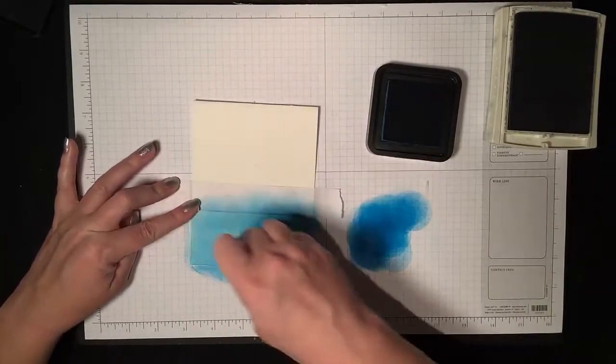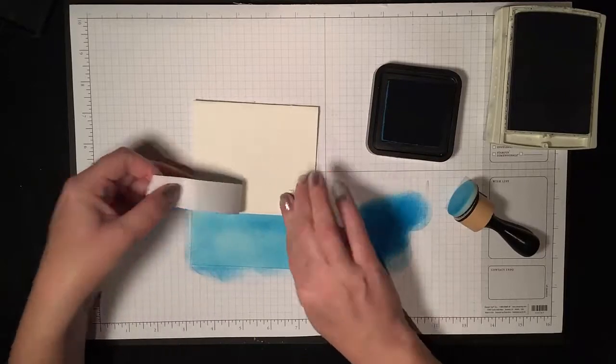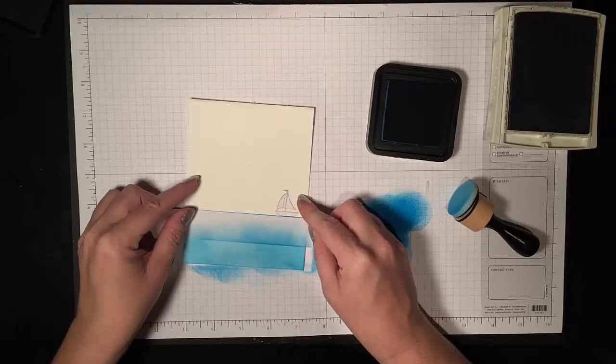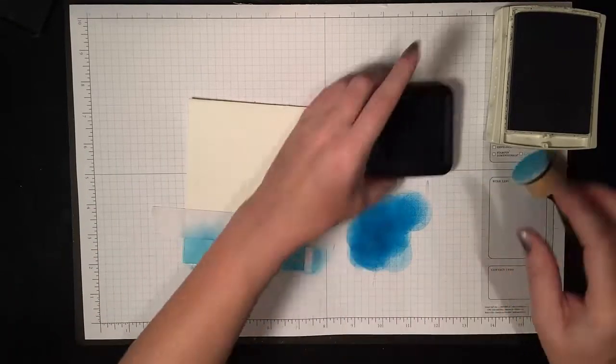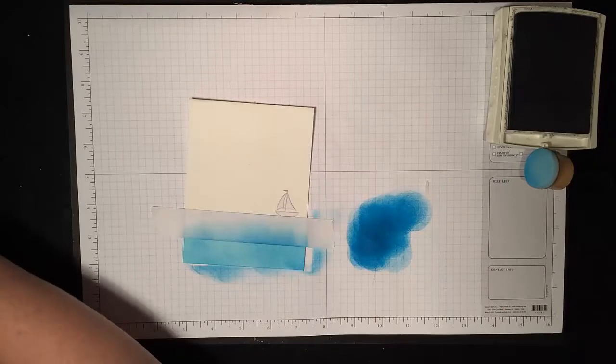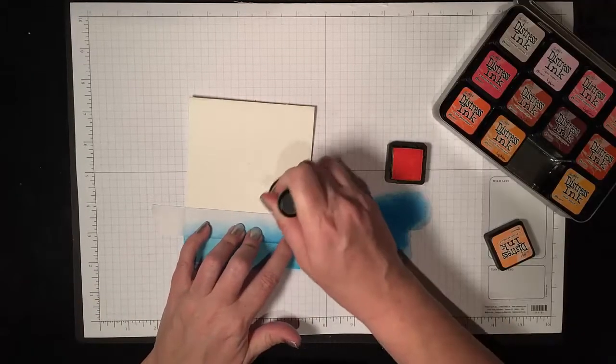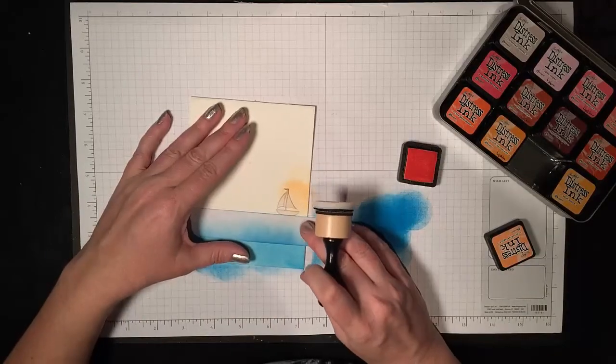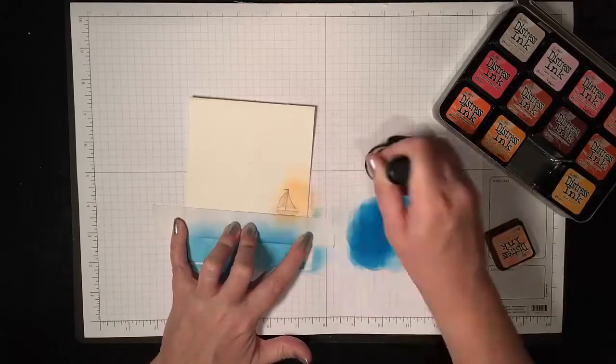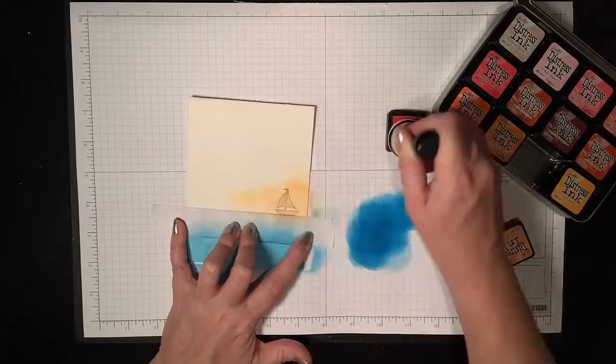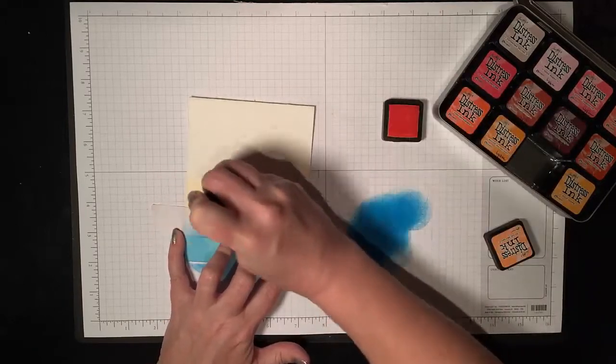Then to do the sky, you'll want to put the tape back down maybe a little bit inside the ocean line because you don't want there to be a white gap in between the sky and the ocean because that could also indicate a crack in the fabric of the universe, and that's not really what you're going for when you're making a card.